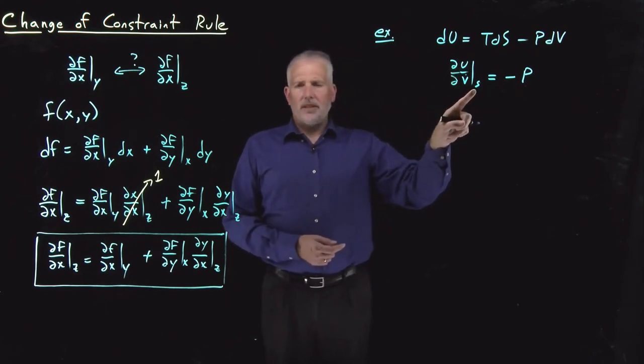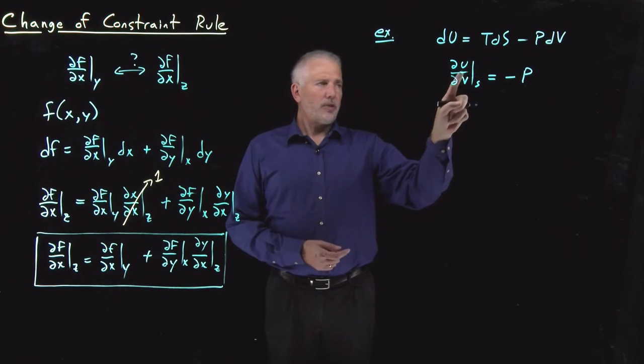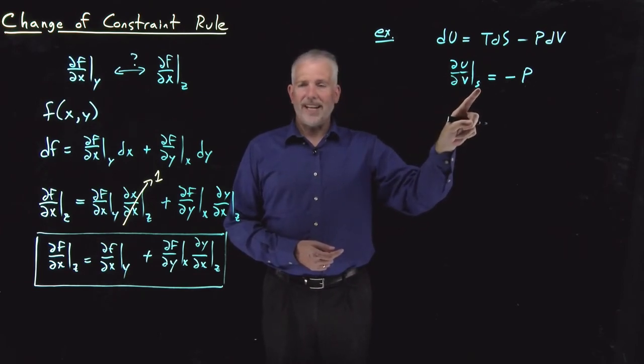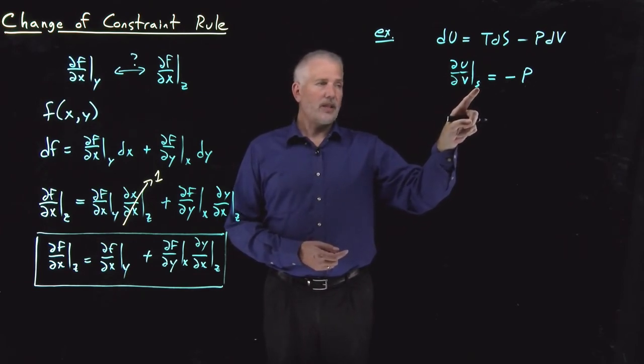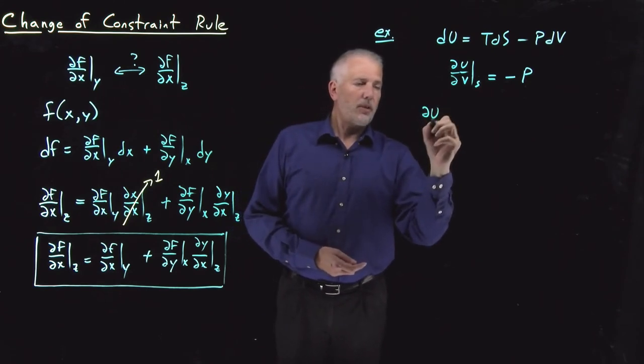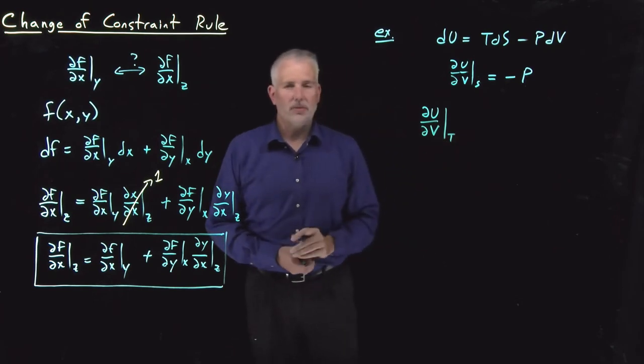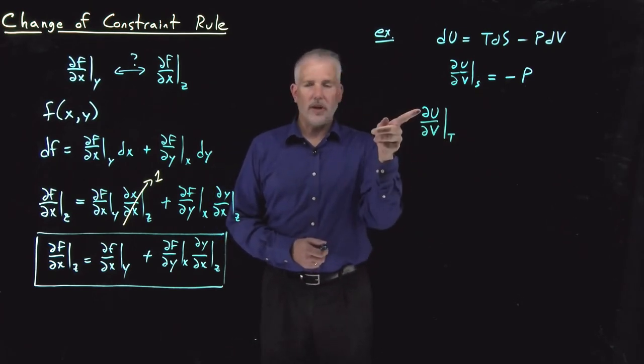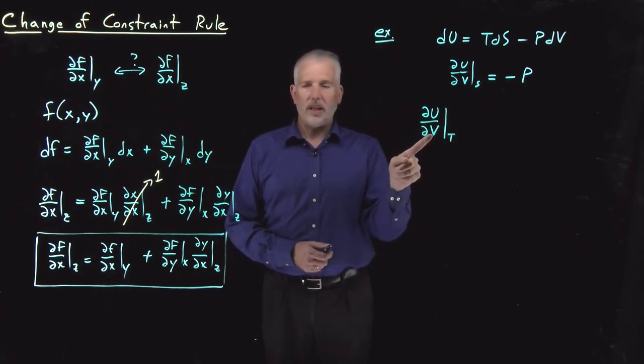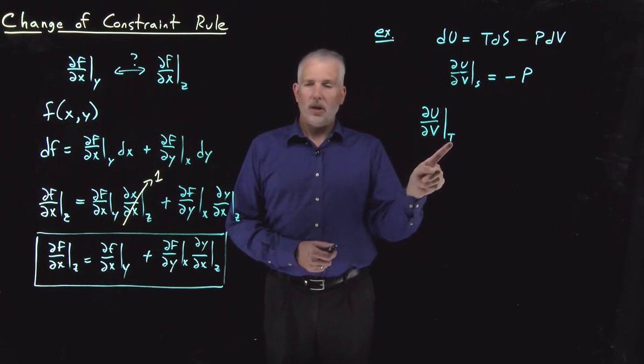∂u/∂V at constant S is not a terribly useful thing to know. We don't tend to do things isentropically while holding the entropy constant. A more common thing to do would be to do something isothermally. So it's probably more likely that we'll run across circumstances where we want to know how much the internal energy of something is changing while I change its volume holding the temperature constant.